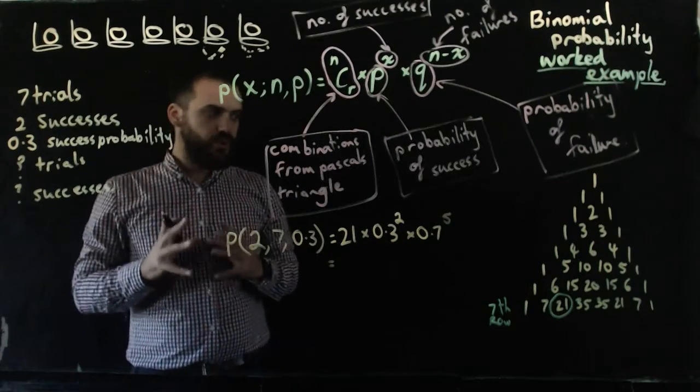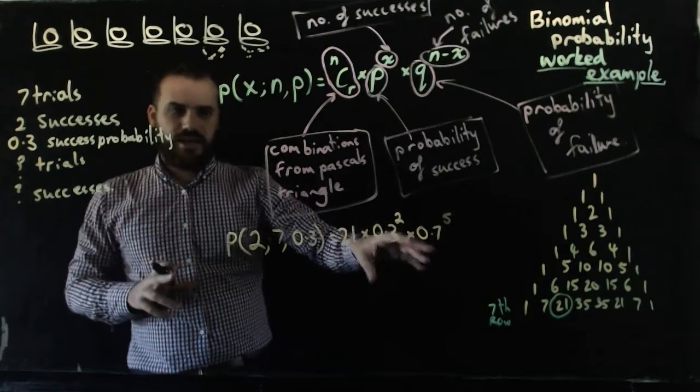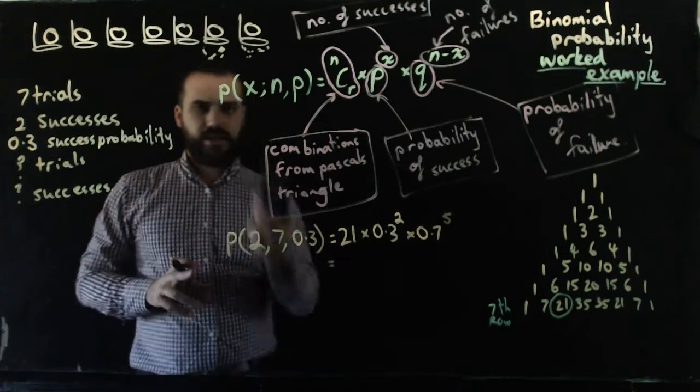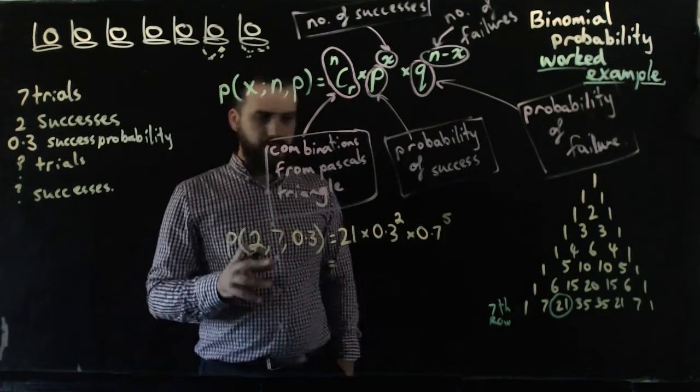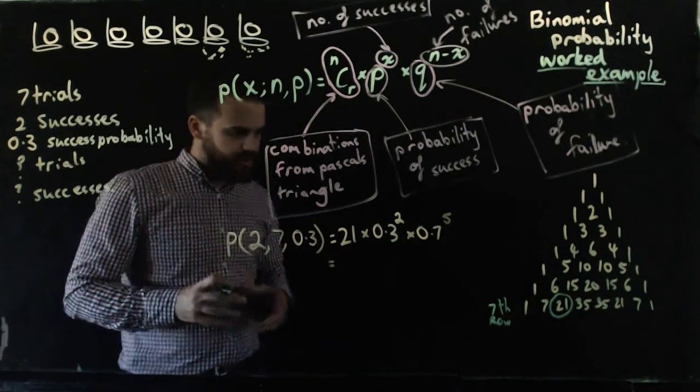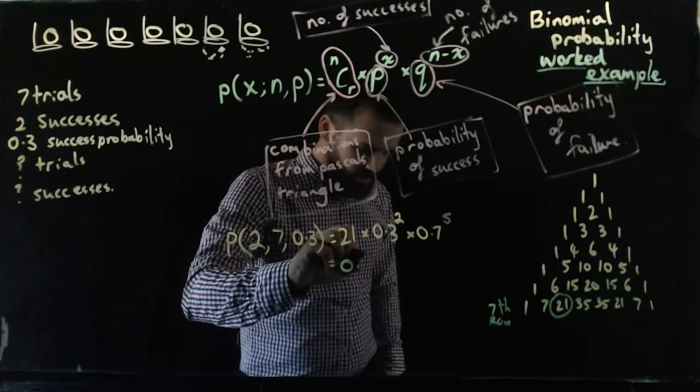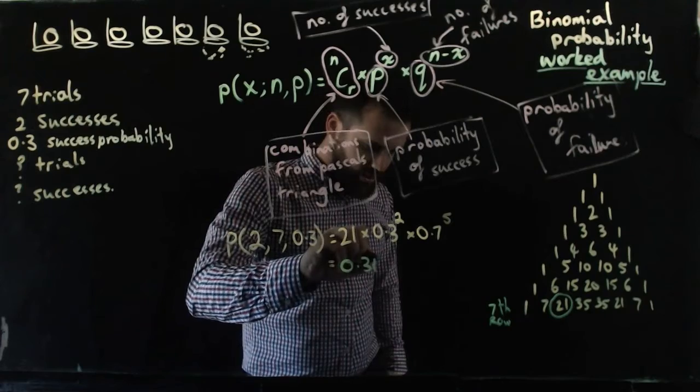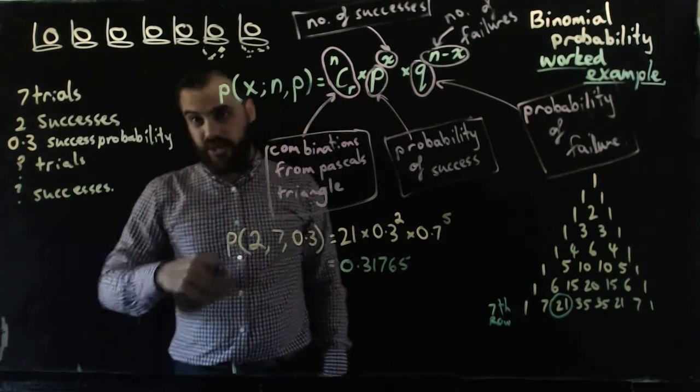That's all of the working you need to show. So you need to show Pascal's triangle here, you need to write that out, and then you pick up your calculator, you type it all in, and the answer pops out. And the answer that pops out is 0.31765.